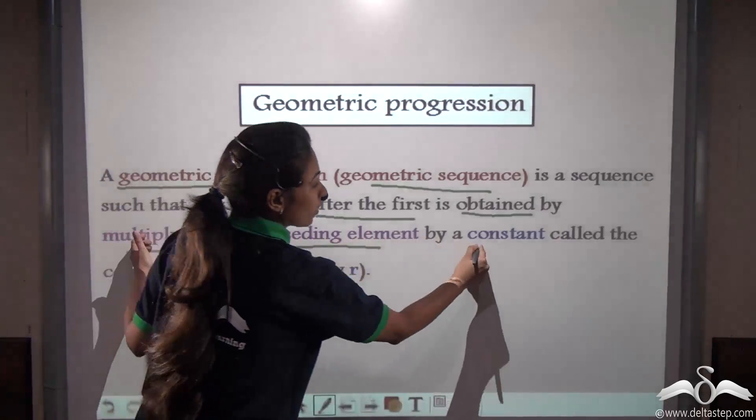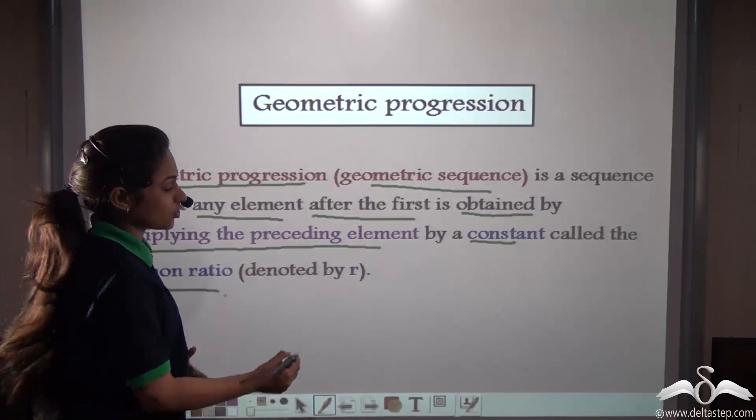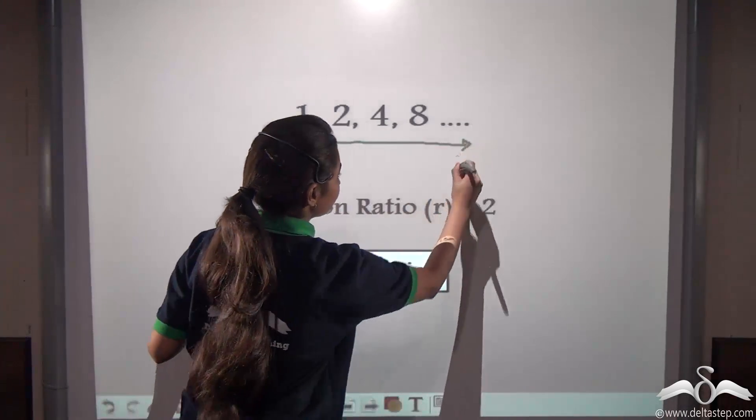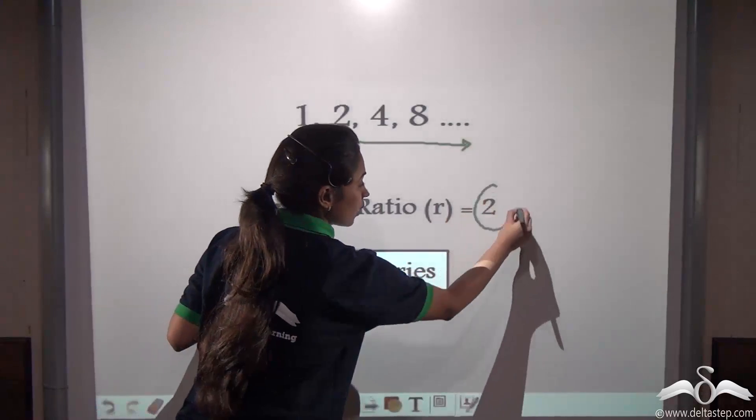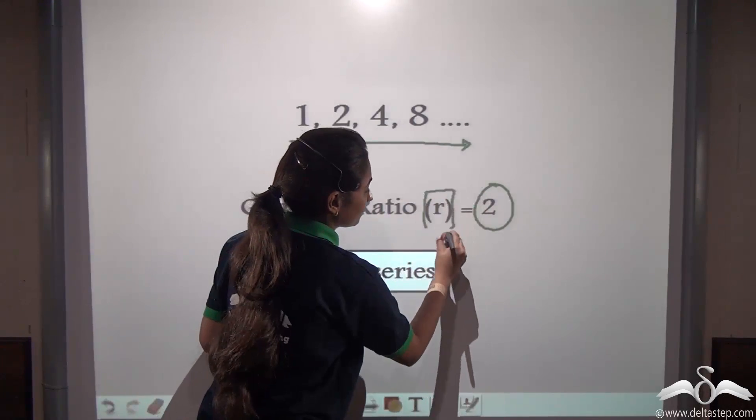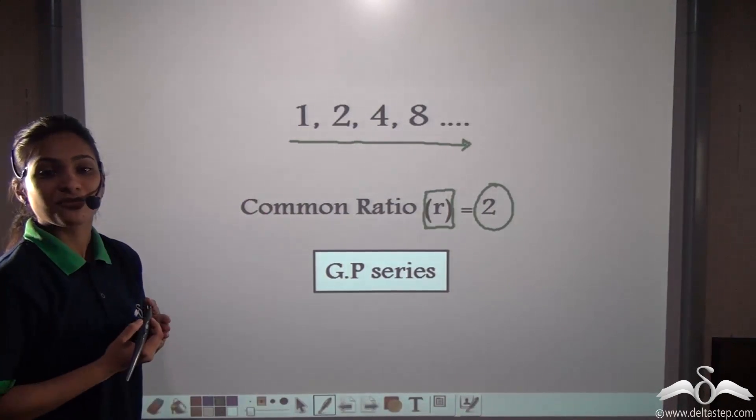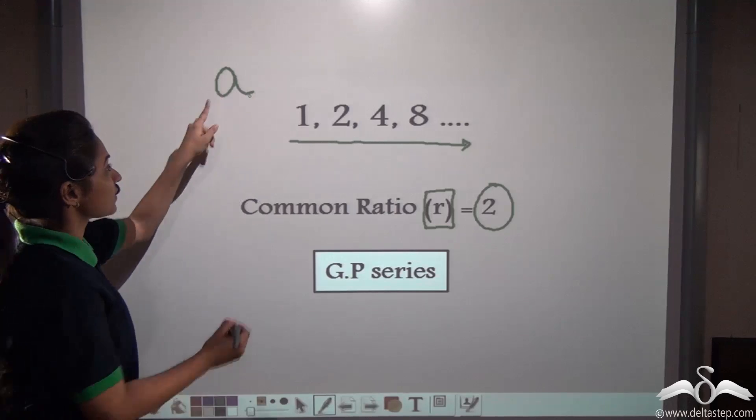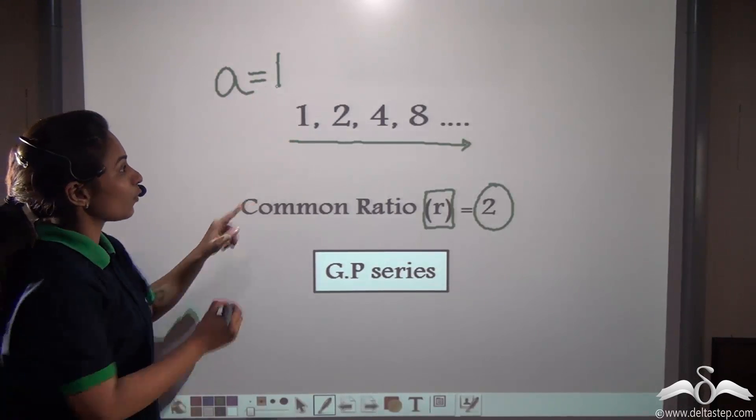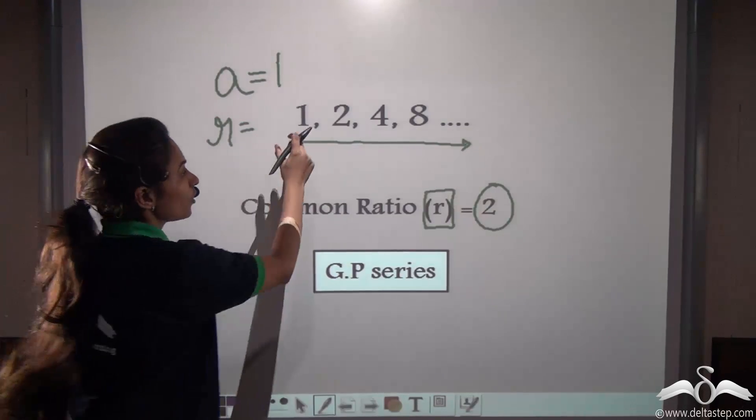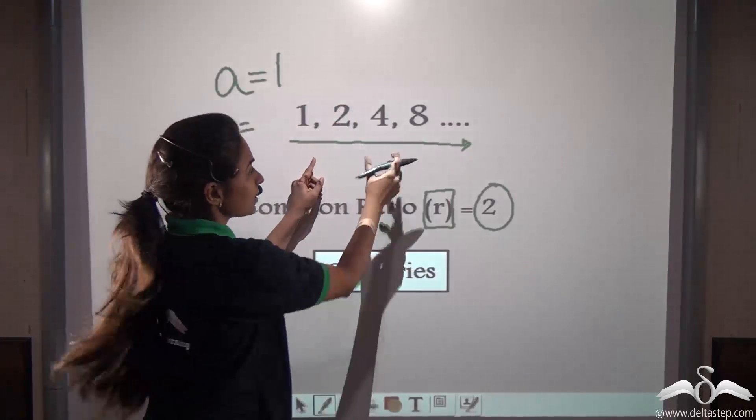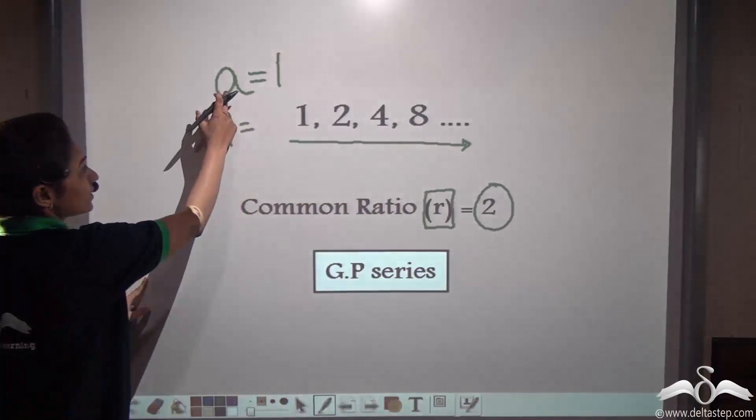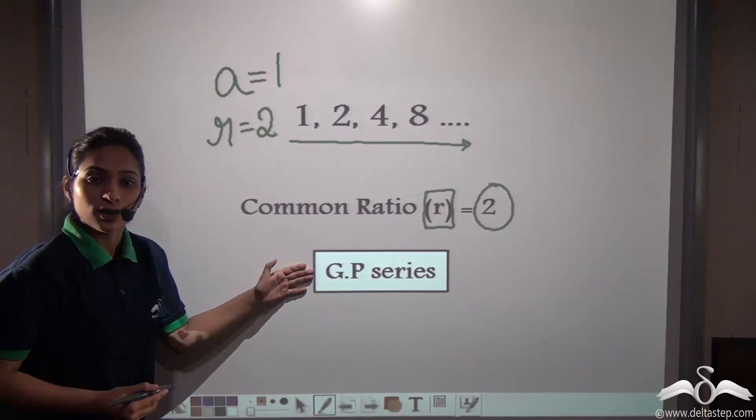So multiplying the preceding element by a constant called the common ratio. Now this common ratio is denoted by R. So in this case, what do you see? This is a series of numbers. Here the common ratio was what? Two and this will be denoted with the small letter R. Now in any GP series, the first term or the first element of this GP series will be denoted by A. So the first term of this GP series is one. So we will say that A is equal to one. And what is R? R is the common ratio, the number which when multiplied to the preceding element, we get the next element. Take any two numbers here, four and eight. When you multiply four with two, you get eight. So this two is constant here. So we can say that A is one and common ratio is two. So this is what we call a GP series.